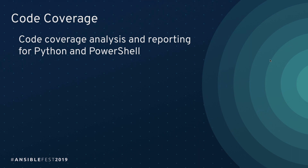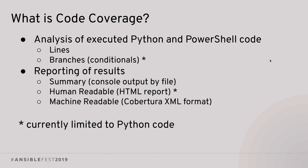One of my favorites: code coverage. Code coverage gives you analysis of executed lines of code — both Python and, thanks to a feature recently added for Ansible 2.9, PowerShell modules. For Python code, you can get both branch coverage and line coverage. PowerShell is currently limited to line coverage. The difference is that line coverage tells you hit or no-hit for each line, while branch coverage — for conditionals and loops — tells you partial or full coverage. For example, if you only test a Boolean condition when it's true, that's partial coverage; testing it both true and false gives you full coverage.